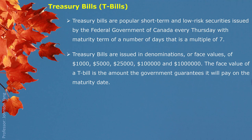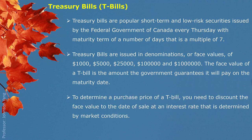After the issue time, before maturity, if the Treasury Bill is being traded in the market at any time, it would follow the interest rate at that moment — the market situation. To determine a purchasing price of a Treasury Bill, you need to discount the face value to the date of the sale at the interest rate determined by the market condition.